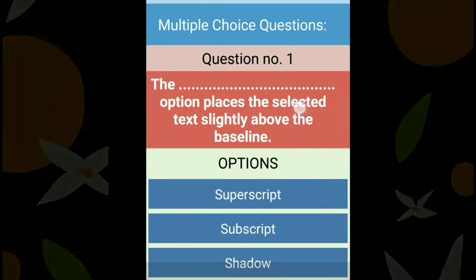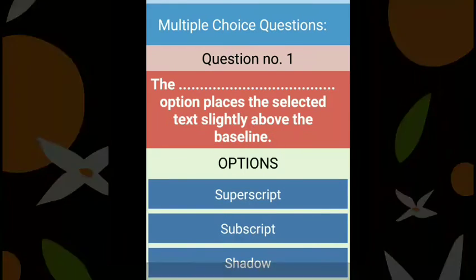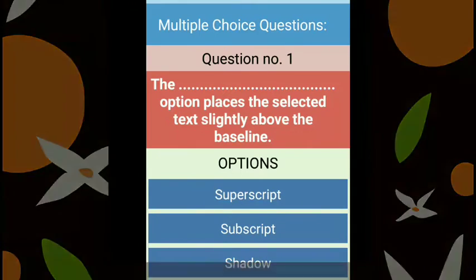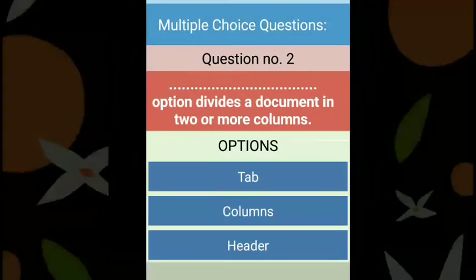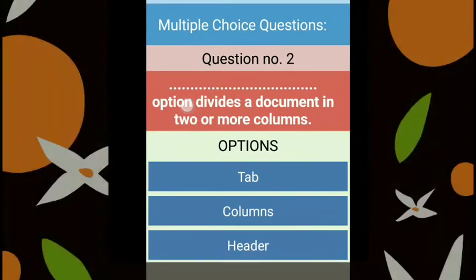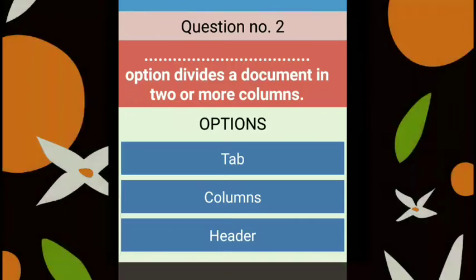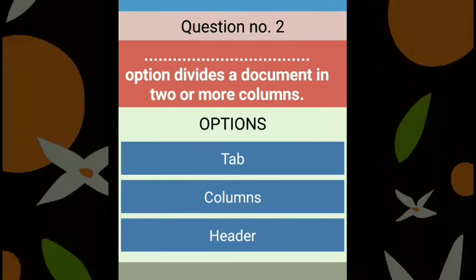Multiple choice questions. The first question: the dash option places the selected text slightly above the baseline. The right answer is Superscript. Second question: the dash option divides the document into two or more columns. If we want to divide the document into columns, we use the Columns option. The right answer is Columns.